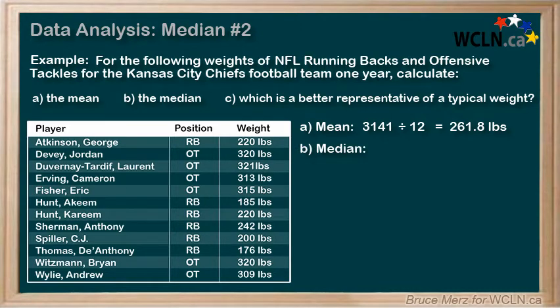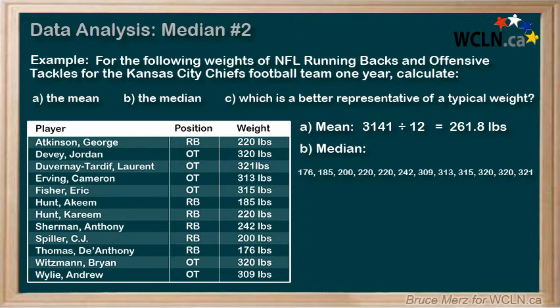For part B, in order to calculate the median, the first thing we need to do is put those weights in order. When we do that, we then try to find the middle — the value where there are as many numbers in front of it as behind it. Technically, the position with the same numbers in front and behind is right here — there are six numbers in front and six numbers behind.